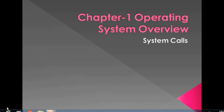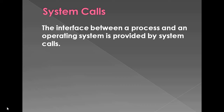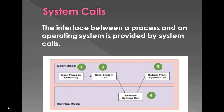Today we shall see the next point of this chapter: system calls. What is a system call? The interface between a process and an operating system is provided by the system call. In general, system calls are available as assembly language instructions. System calls are usually made when a process in user mode requires access to a resource.